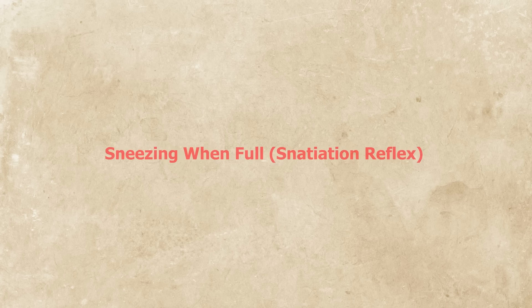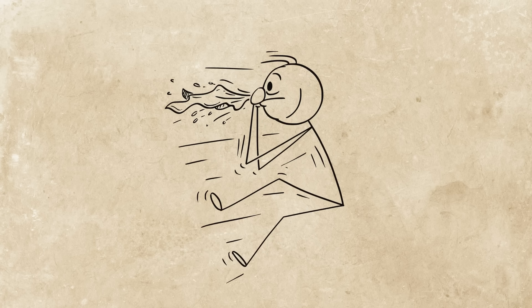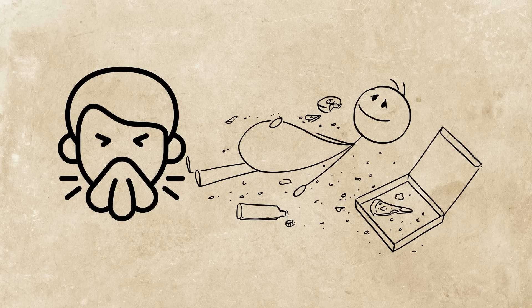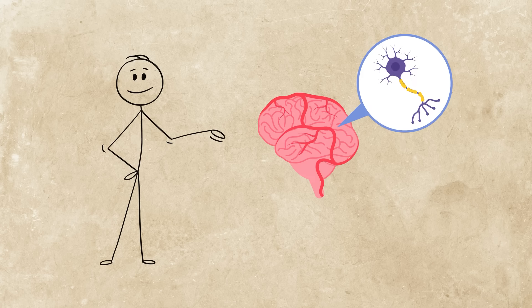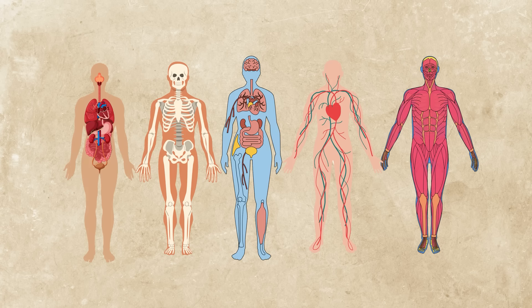Sneezing when full. Snatiation reflex. You finish a big meal, lean back, and sneeze. That's snatiation, the weird sneeze reflex triggered by a full stomach. It may be tied to the vagus nerve, which connects your brain to your gut. A stretched stomach might accidentally activate the sneeze center. It's rare, mostly harmless, and the perfect example of how tightly and weirdly interconnected your body's systems are.